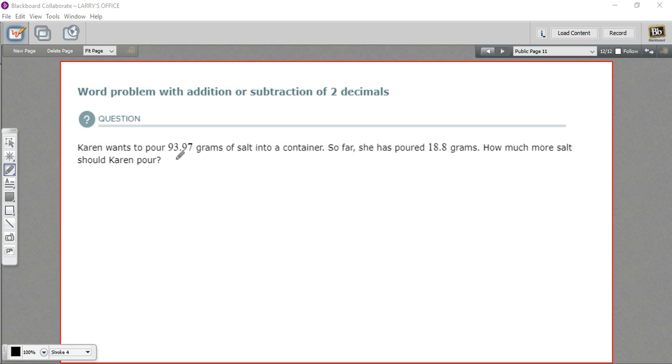It says Karen wants to pour 93.97 grams of salt into a container, and so far she's poured 18.8 grams. How much more salt should Karen pour? So she wants to get up to a total of 93.97 and she's already done this much. So it'd be 18.8 plus some amount that would equal 93.97.